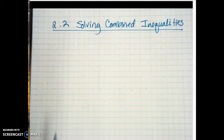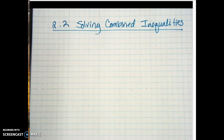Section 2.2 is called solving combined inequalities. Yesterday we looked at basic inequalities, so today we're going to do inequalities again, but they're going to be a little more complicated.